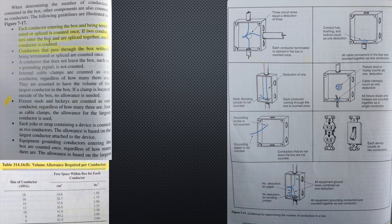Equipment grounding conductors entering the box are counted once, regardless of how many there are. The allowance is based on the largest conductor, or the largest equipment grounding conductor. If an additional set of equipment grounding conductors is present, a second allowance must be included.